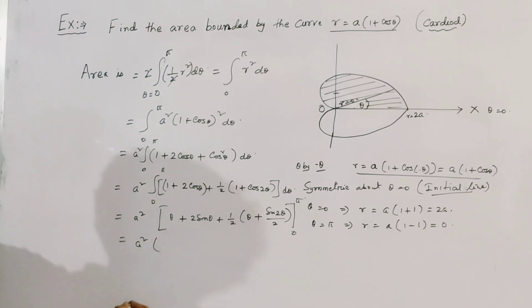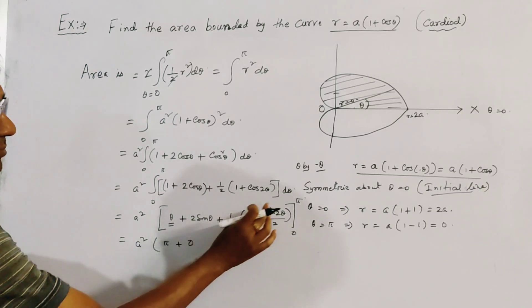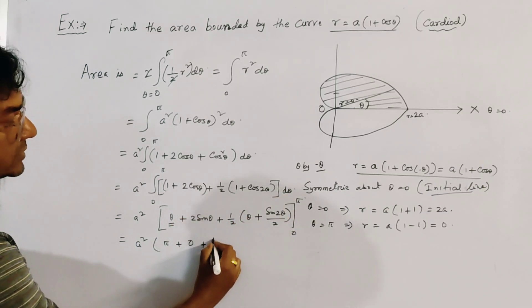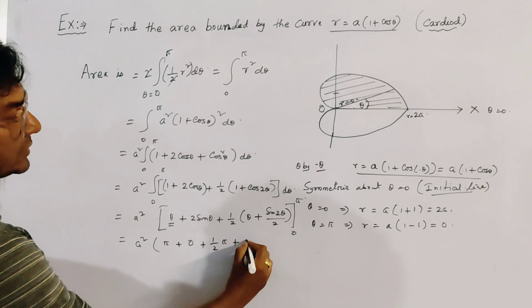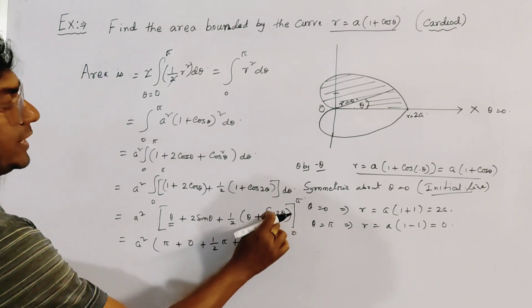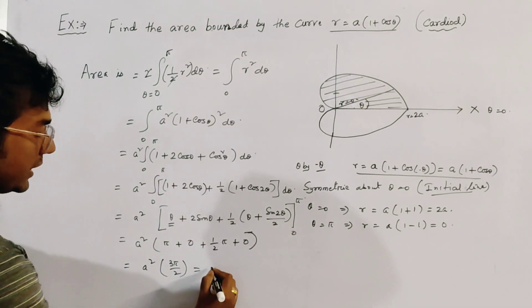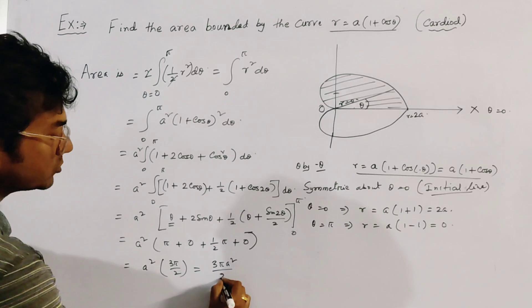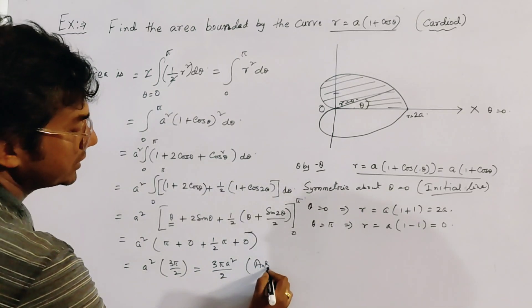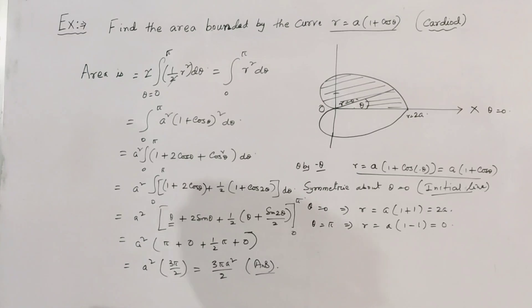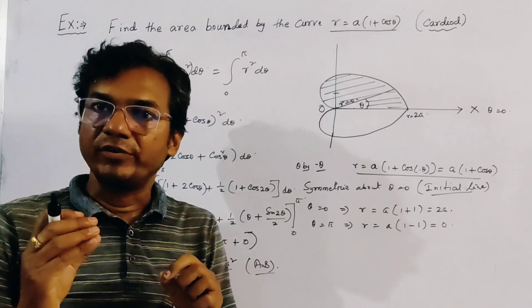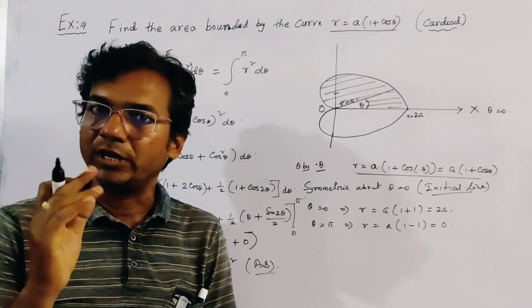And by putting the range, we get from this pi, this is 0 because sin pi is 0 and sin 0 is 0. From this, half into pi plus this is also 0 because sin 2 pi is 0 and sin 0 is 0. So the result is A squared into 3 pi by 2, because pi plus pi by 2, and the area is 3 pi A squared by 2 of the cardioid. This is the final answer of this problem. This is a very important problem of area.